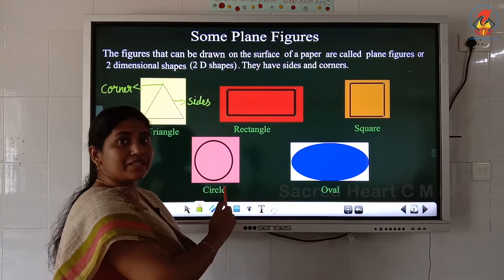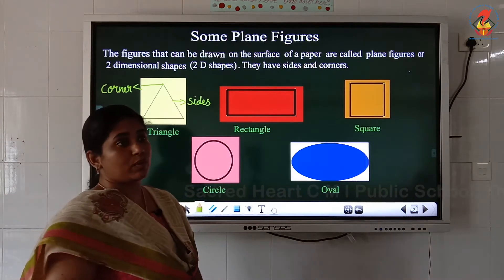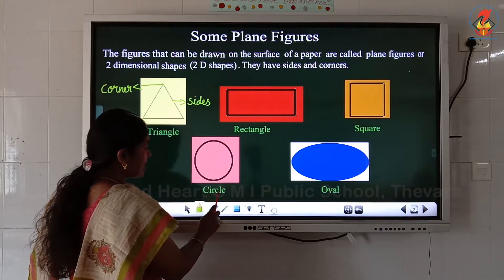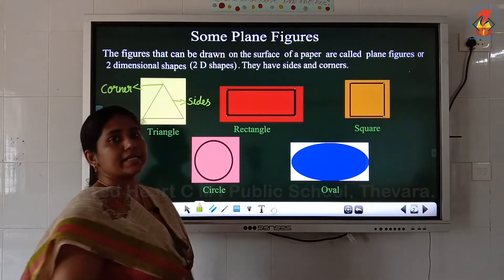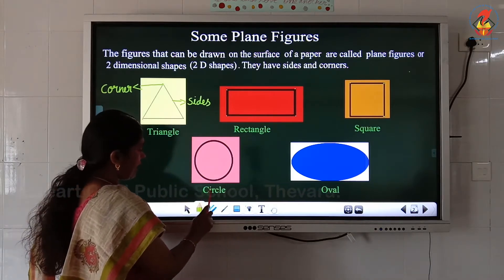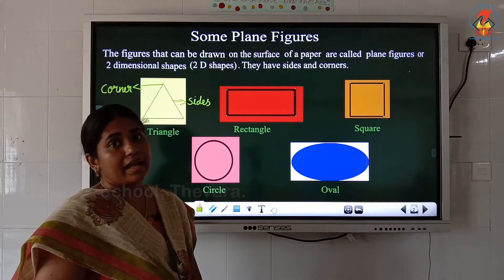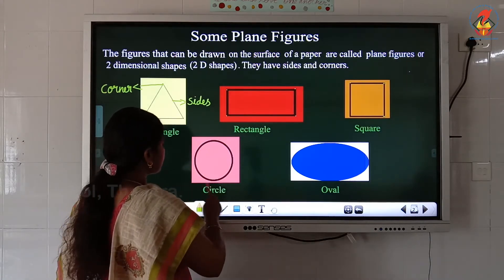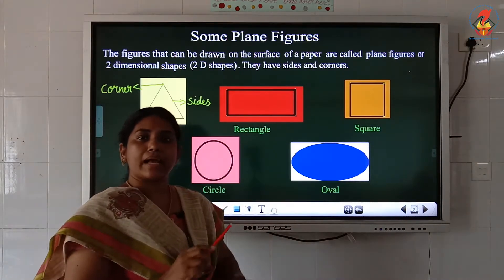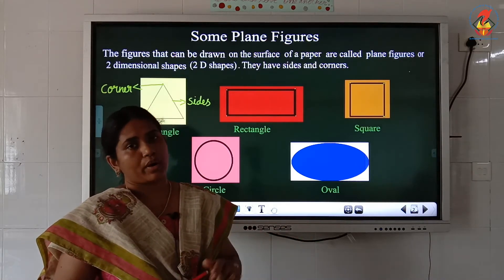The next shape is called a circle — spelling: C-I-R-C-L-E. A circle is round in shape. It has no sides and no corners — zero sides and zero corners.